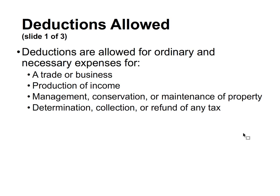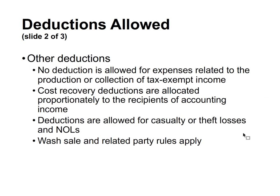There are no deductions allowed for expenses related to the production or collection of tax-exempt income — just as under the individual rules. Cost recovery deductions such as depreciation and amortization are allocated proportionally to the recipients of accounting income. Deductions are also allowed for casualty or theft losses, and NOL rules apply. Wash sale and related party loss rules also apply to estates and trusts.